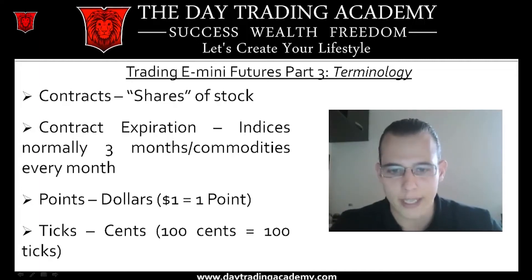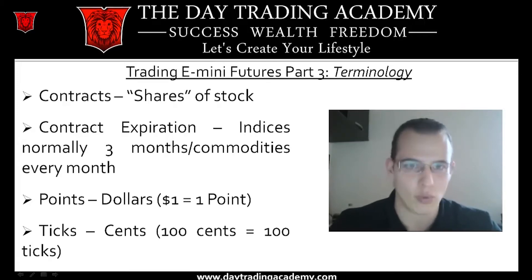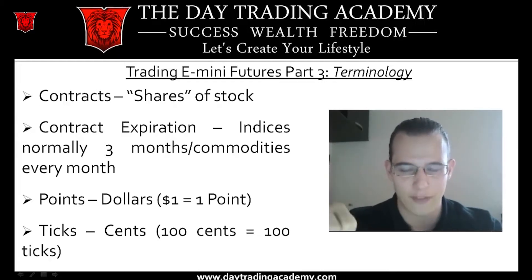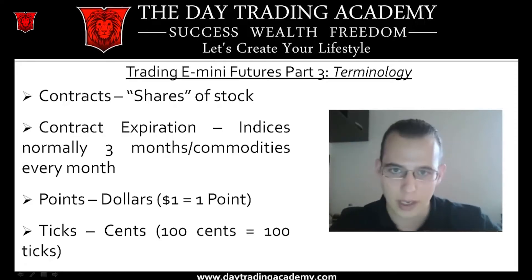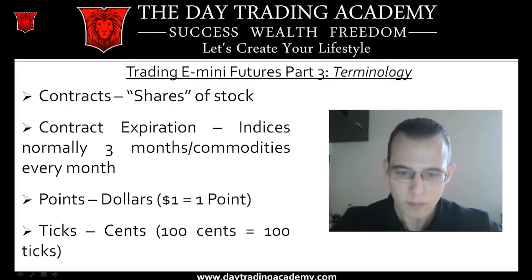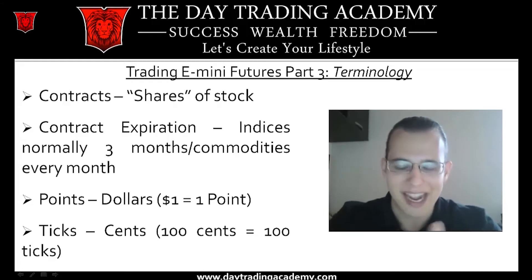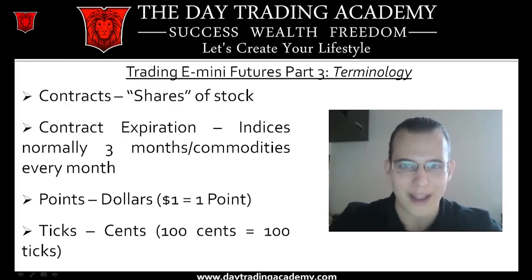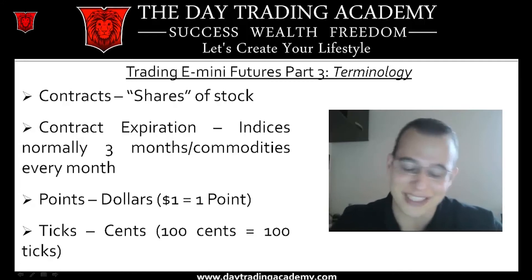So if I say that the market went up a point, that means it went up a dollar. When I say it went up two points, that means it went up $2. Ticks are the amount of cents in a future. The structure of each actual contract is structured differently. The normal way that we think about money is that there's always 100 cents in a dollar, but not every futures contract has 100 cents in a dollar — some have only 4 cents in a dollar. That's just the way it works.